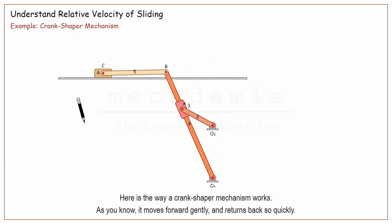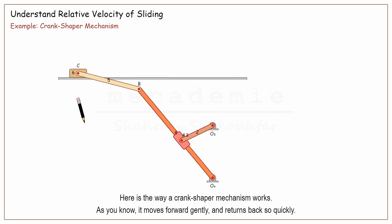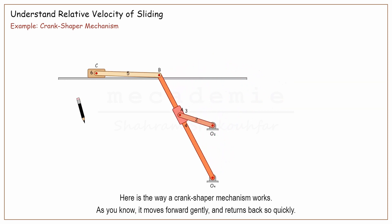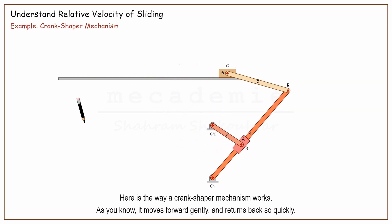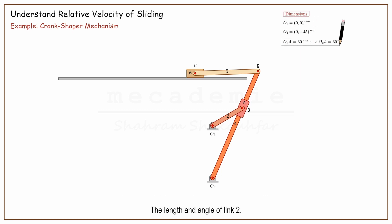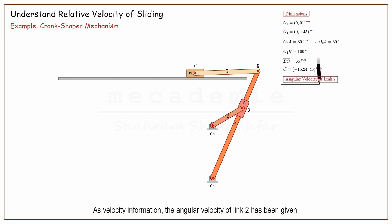Here is the way a crank shaper mechanism works — it moves forward gently and returns back quickly. The essential dimensions of the mechanism have been given, including the positions of supports O2 and O4, the length and angle of link 2, the lengths of links 4 and 5, and the initial position of point C. As velocity information, the angular velocity of link 2 has been given.